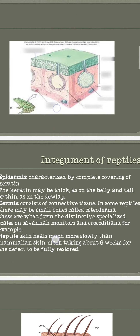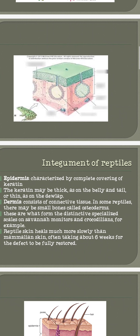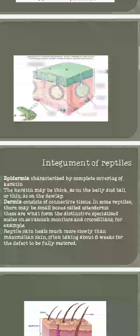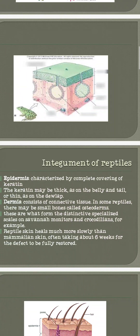Now we talk about the integument of reptiles. Reptiles include snakes, lizards, crocodiles, turtles, and tortoises. They all have skin composed of epidermis and dermis. The outer epidermis is basically dead, and within the epidermis there is a deposit of keratin — a very tough and impermeable protein.